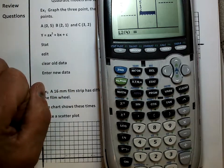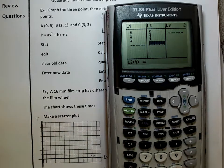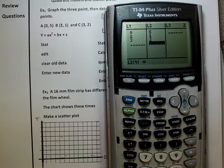Let the x values be list one, the y values be list two. So I'm going to put 0 enter, 2 enter, and 3 enter. I'll go over to list two. List two is going to be my y values: 5 enter, 1 enter, and then 2 enter.